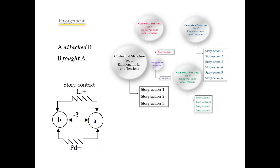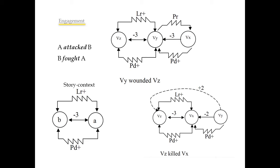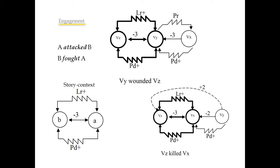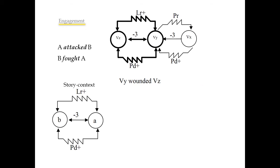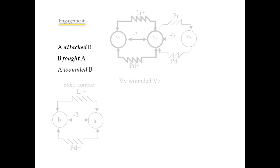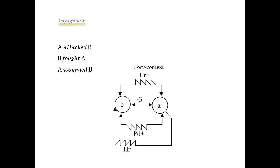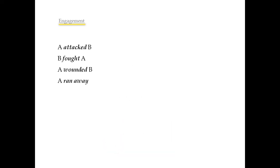The system employs these contexts as a cue to probe memory and finds a structure to match. Let's imagine that we find in memory two contextual structures that can be classified as similar to the story context. Notice that they have very different characteristics and also different associated actions. For this example, the system chooses the first of them. The new action in the story is 'A wounded B.' The story context is updated with the tension 'health of character B at risk.' The process is repeated and the system retrieves from memory the action 'A ran away.' At this moment, engagement has generated three actions and stops.